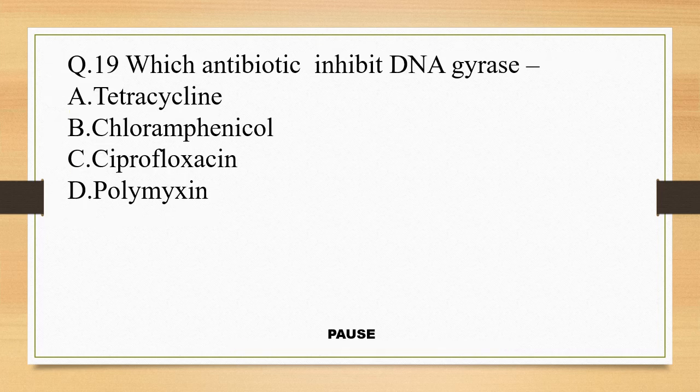Question 19. Which antibiotic inhibits DNA gyrase? Option A, tetracycline; option B, chloramphenicol; option C, ciprofloxacin; option D, polymyxin. And the right answer is option C, ciprofloxacin.